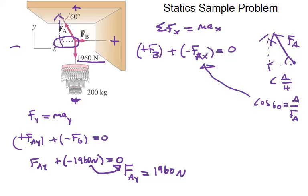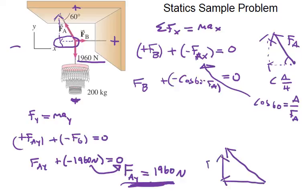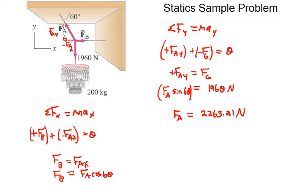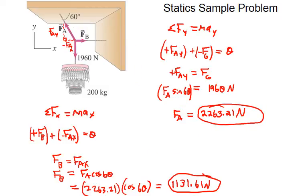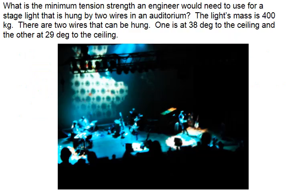So, cosine of 60 equals the adjacent over the hypotenuse, which is FA. In here, we would have negative cosine 60 times FA plus FB equals zero. Knowing this, we know what FAY is. So, if we set up our triangle, FAY, we know what that is. We can find what FA is using trig, the 60 degrees. And then, once we know that, we can place it in here and figure out what FB is. When we do that, we get FA as 2263.21 newtons. And FB is 1,131.61 newtons.